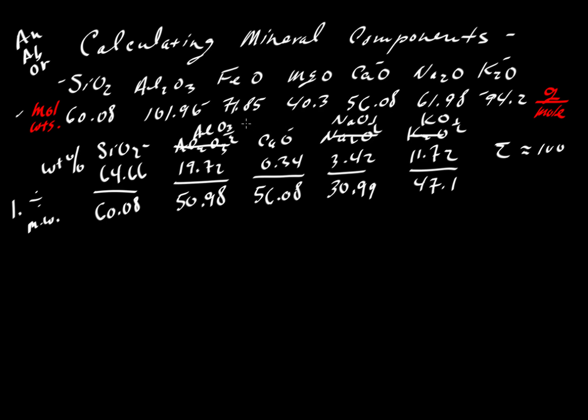When we do those series of division problems, we get 1.076 for silicon, 0.387 for aluminum, about 0.006 for calcium, 0.11 for sodium, and about 0.249 for potassium. The sum of all those things is about 1.828.